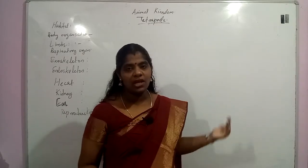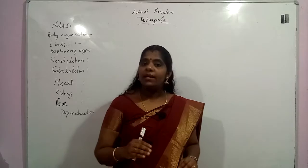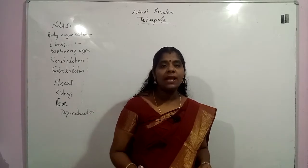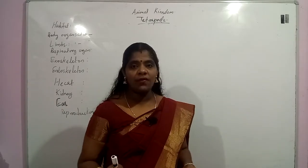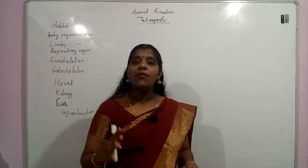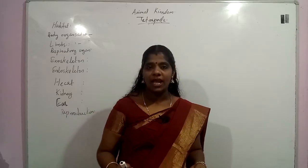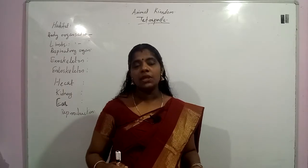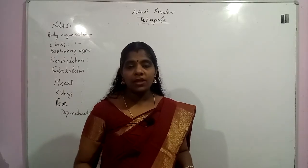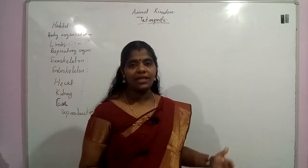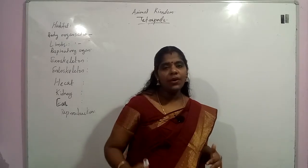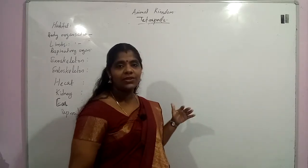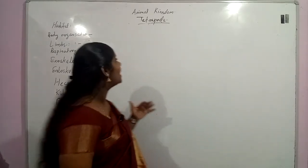The Tetrapoda has two pairs of limbs. They have four limbs — forelimbs and hind limbs. Two pairs of limbs are present in this group of organisms. Now we will look at the characteristic features of this group of organisms.